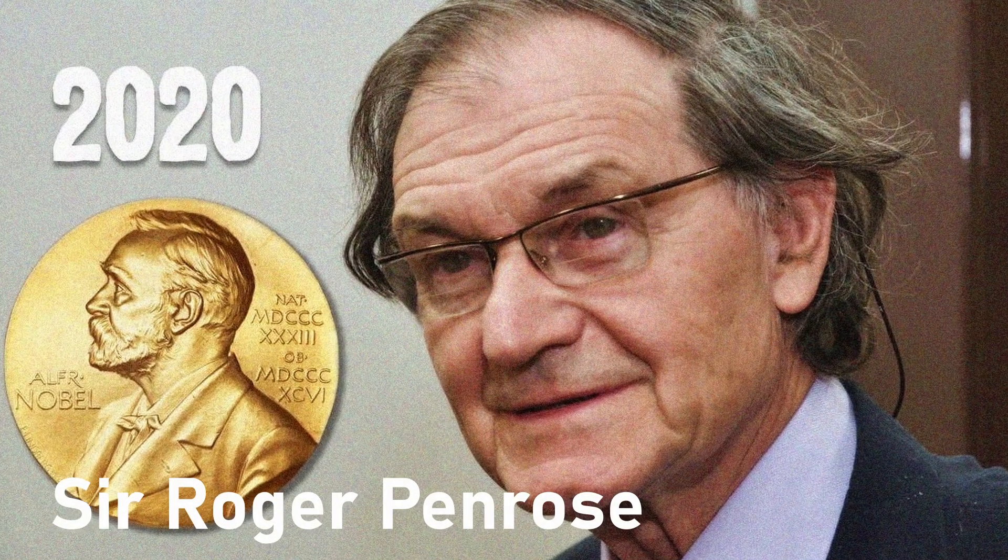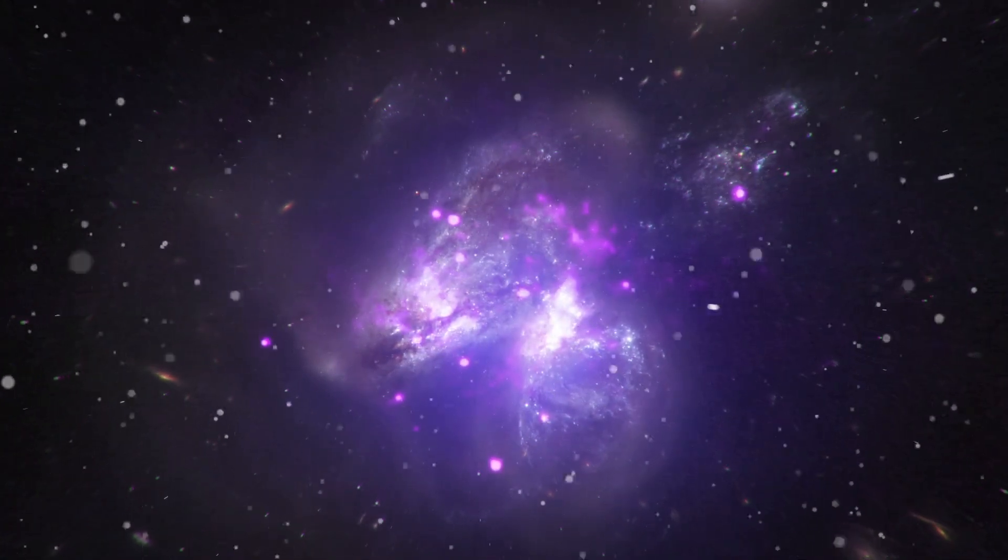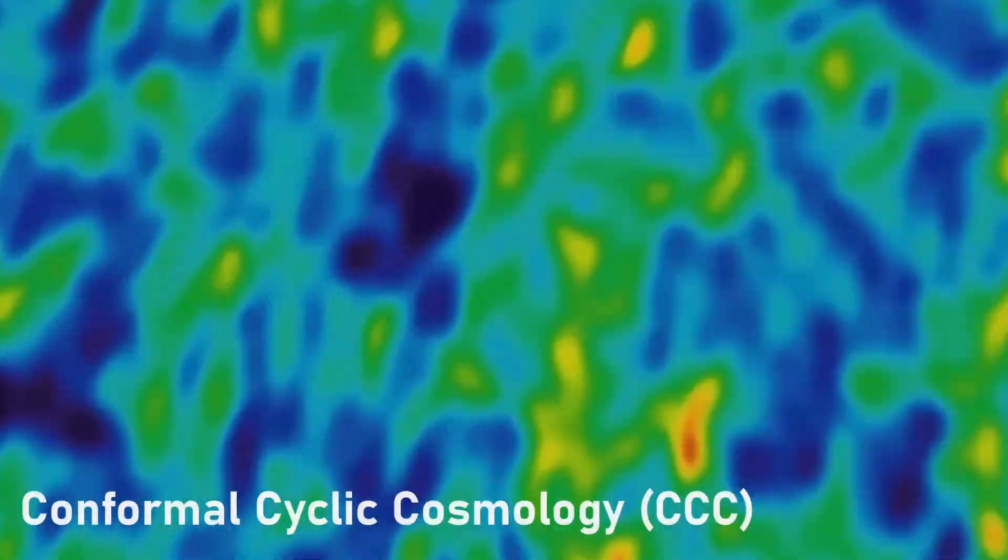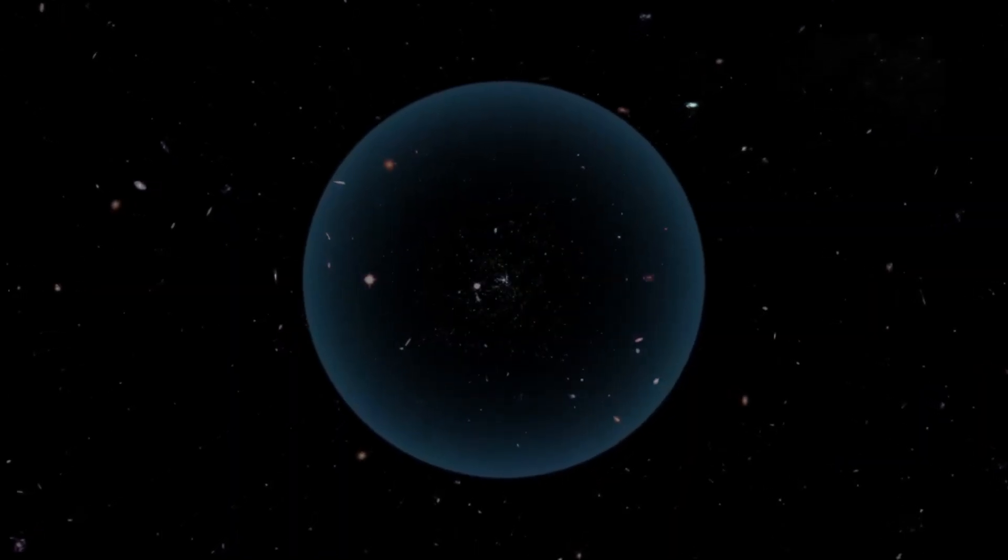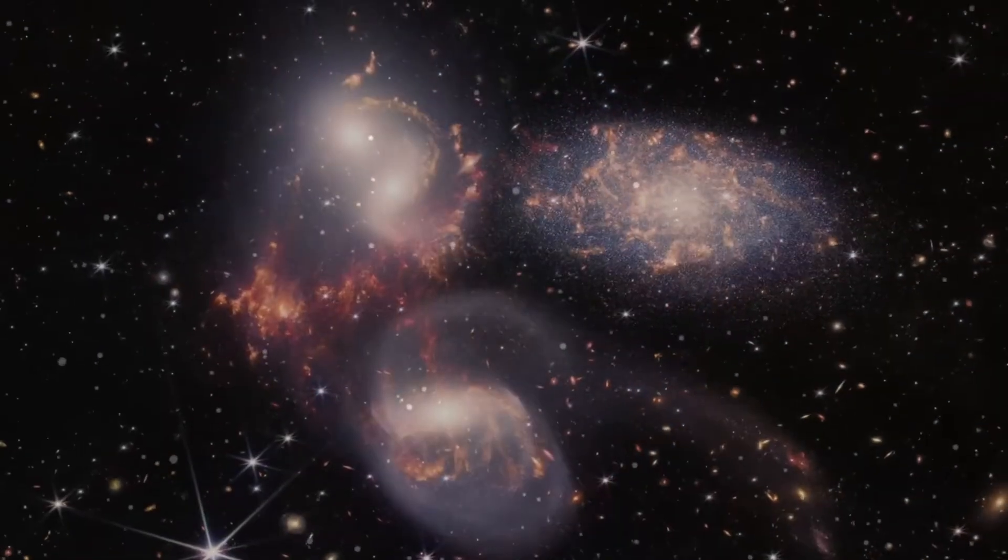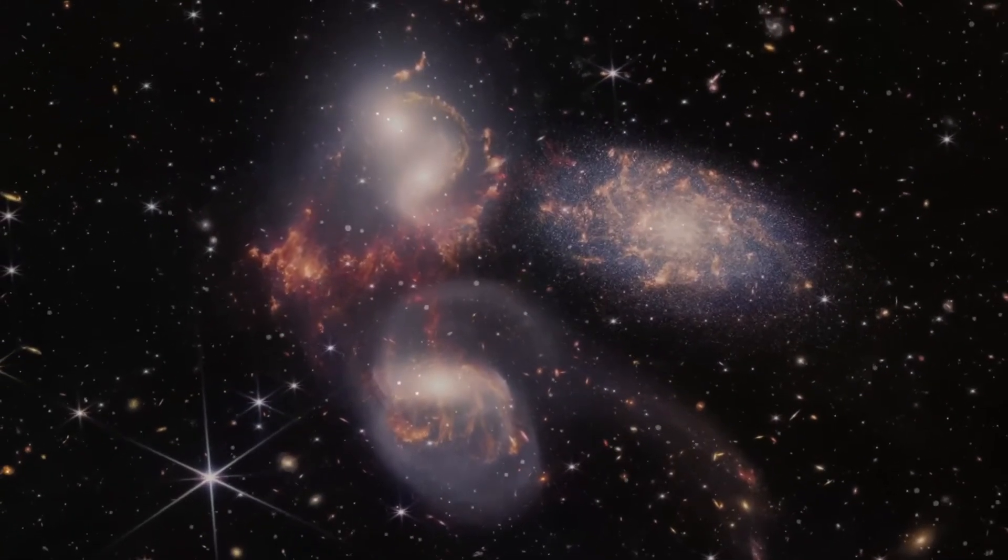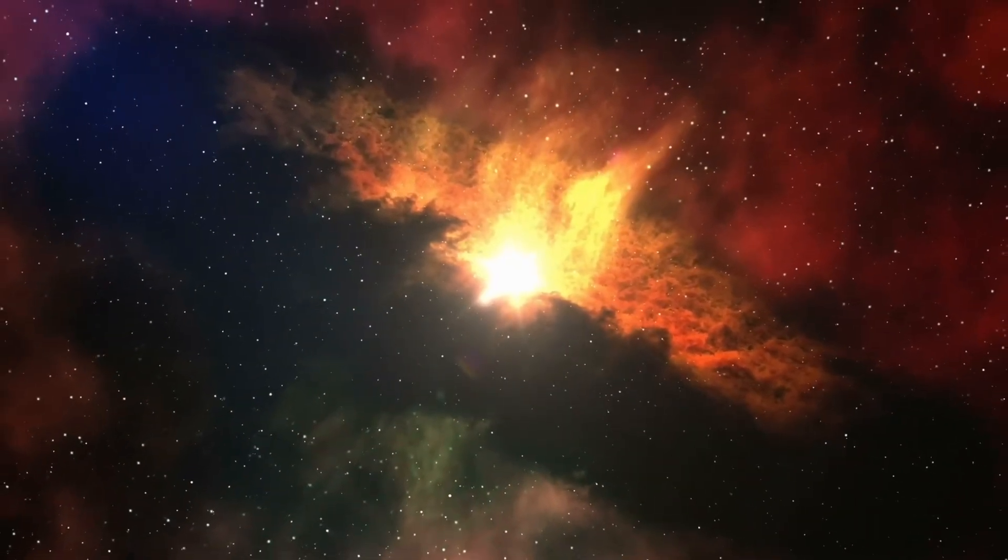This is where Sir Roger Penrose enters the frame. Penrose, Nobel laureate and one of the boldest thinkers in theoretical physics, has long argued that the Big Bang was not the origin of everything, but the end of something else. Penrose's idea is called Conformal Cyclic Cosmology, CCC. It is both daring and strangely poetic. CCC proposes that our universe is only one in an infinite sequence of universes. Each universe lives, fades and gives rise to the next,